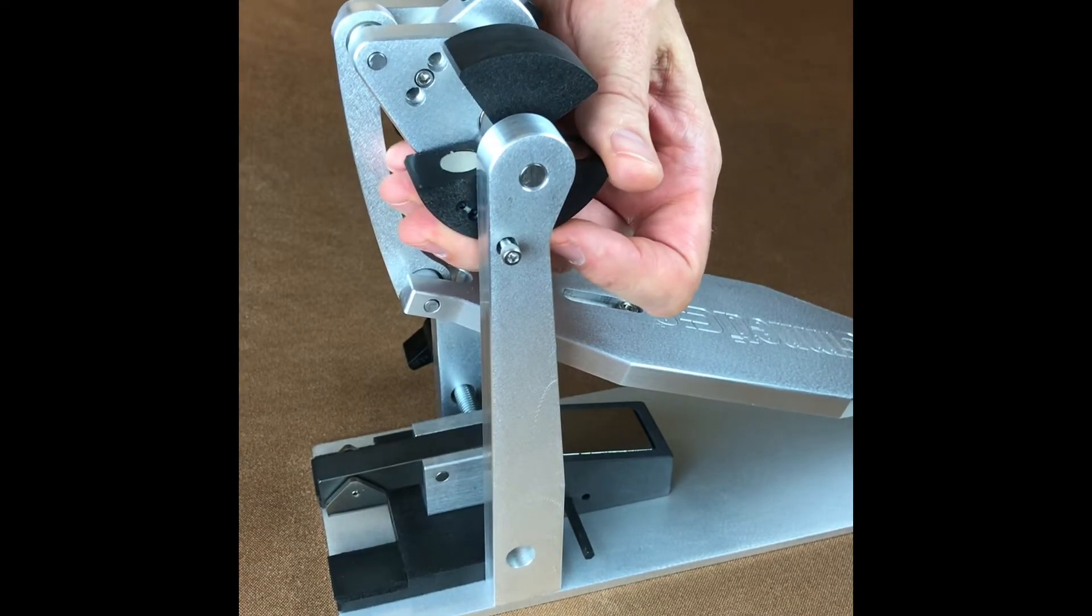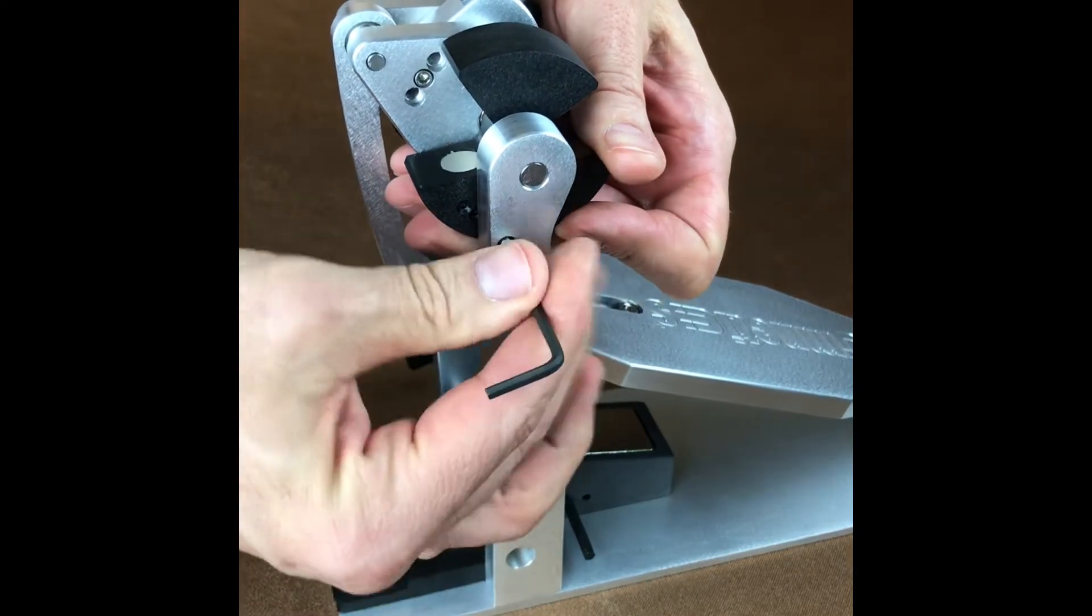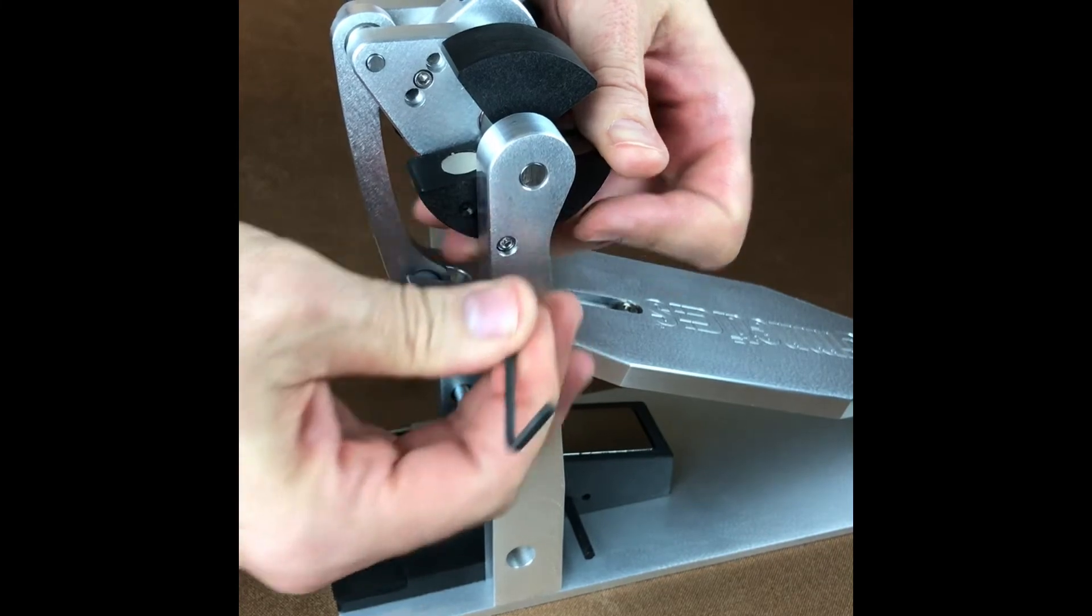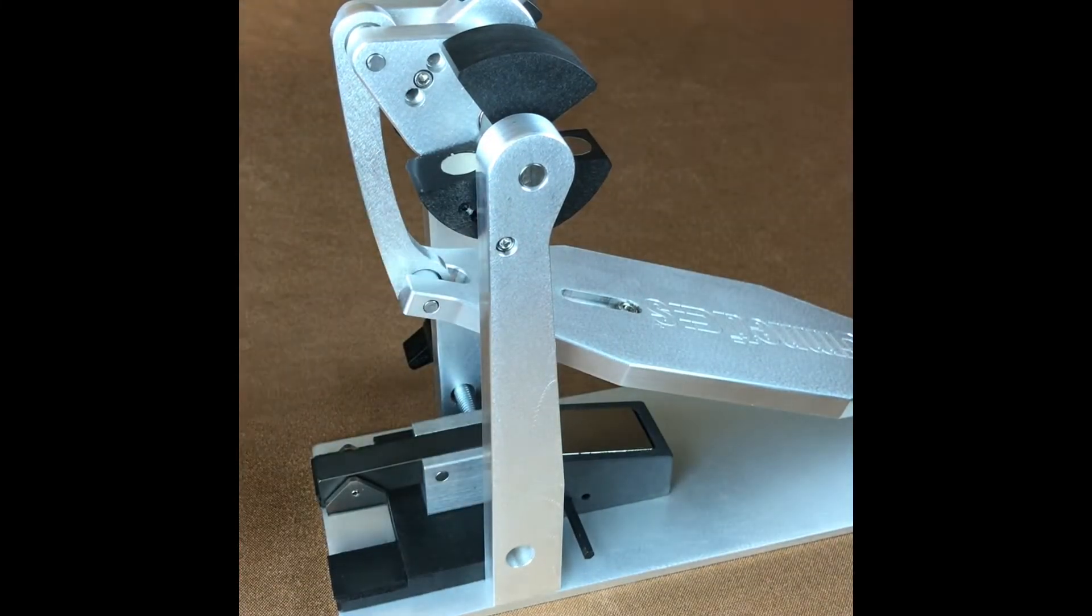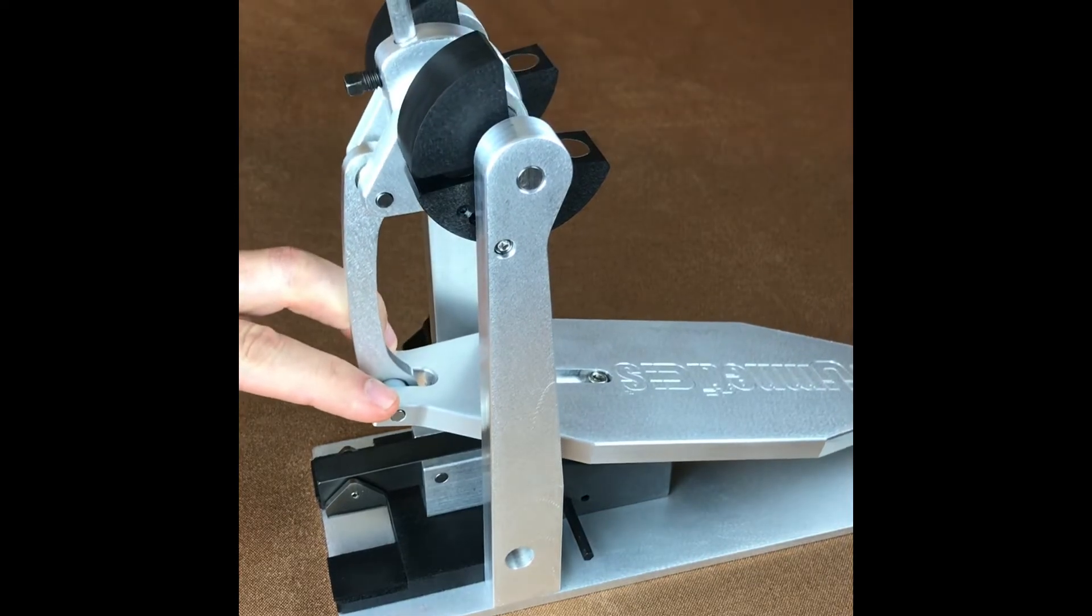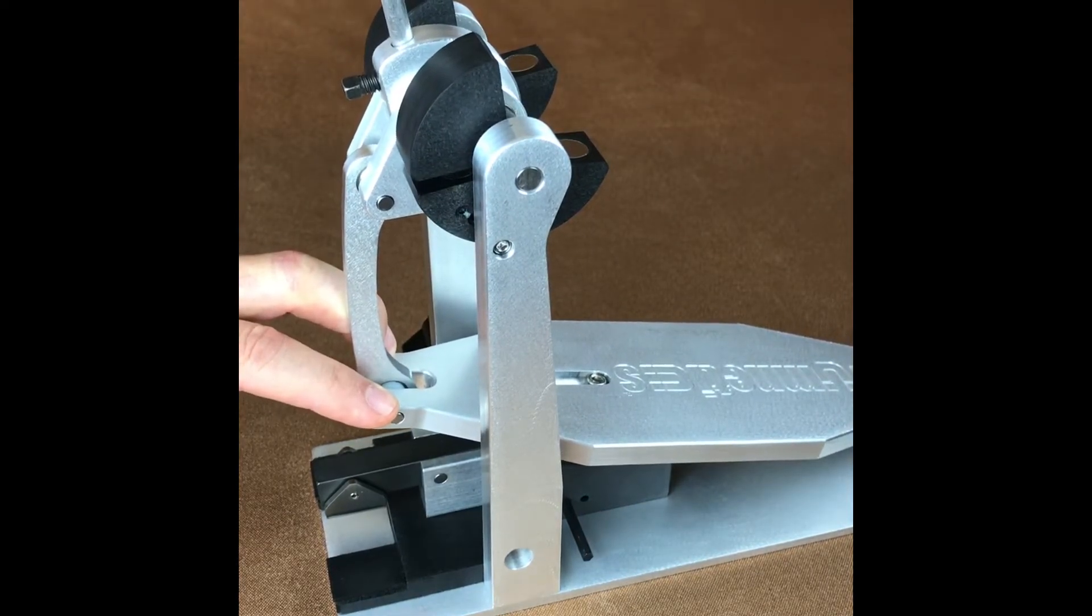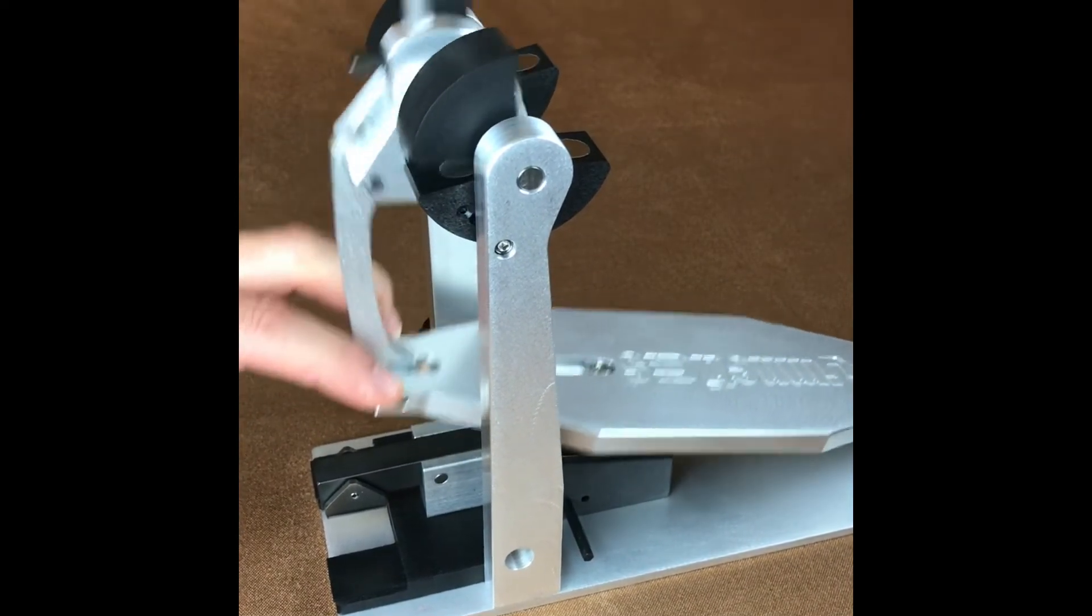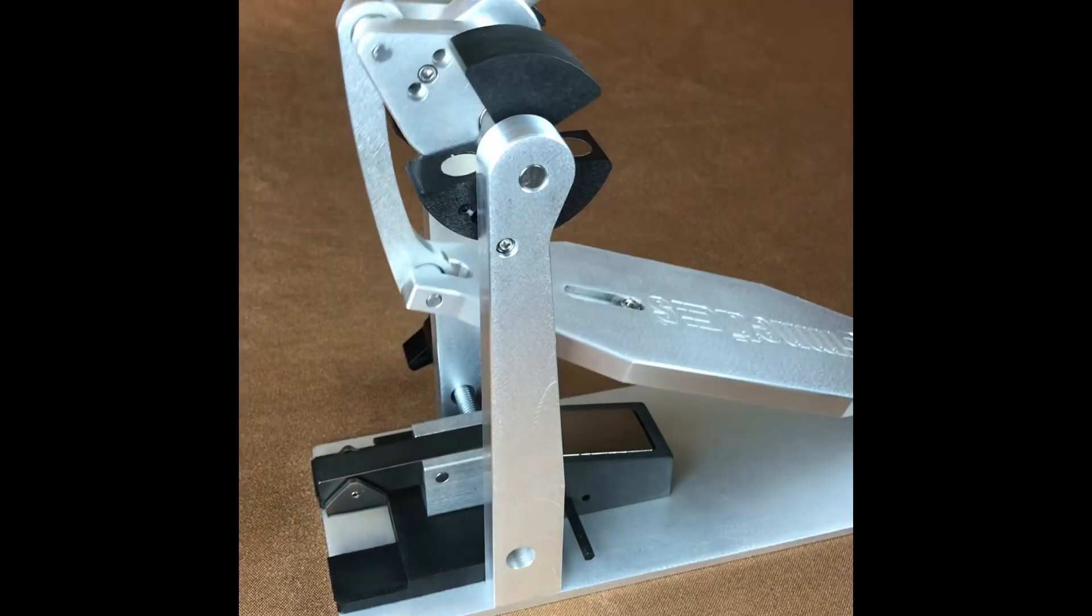So we can actually bring that up one more hole to bring about more repulsion. So it's one more hole backwards which decreases the space between the magnets which then increases the amount of repulsion coming from the magnets. Less space between the magnets means more repulsion.